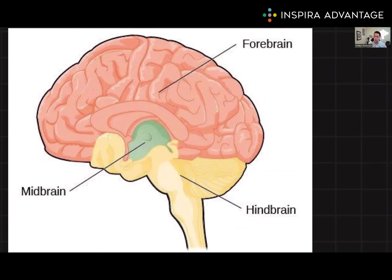Yes, this includes all of the lobes. The subcortical structures, on the other hand, include structures such as the thalamus, hypothalamus, and basal ganglia, which are all involved in a wide range of functions such as sensory processing, hormone regulation, and motor control. Now that we've covered the basic organization of the brain, let's take a closer look at some of the key structures and functions you need to know for the MCAT.